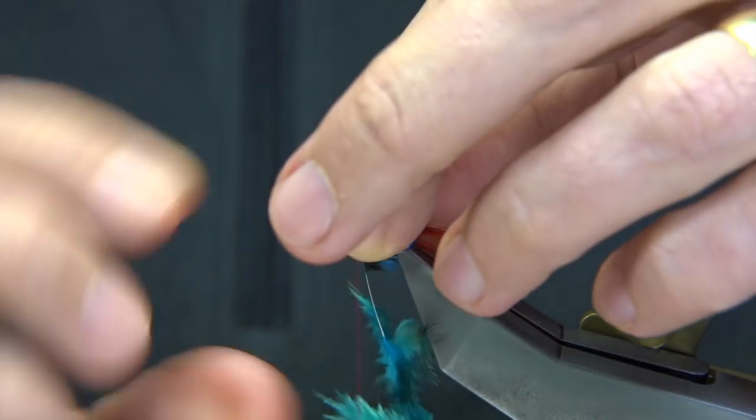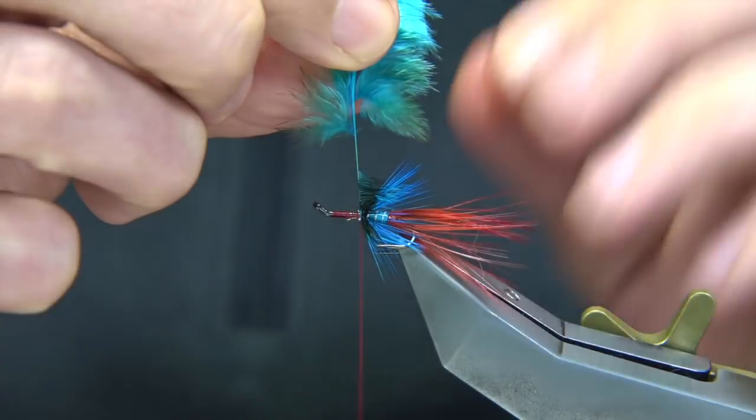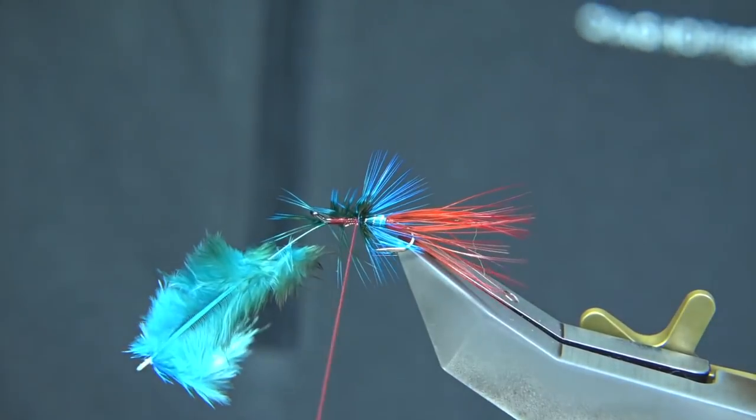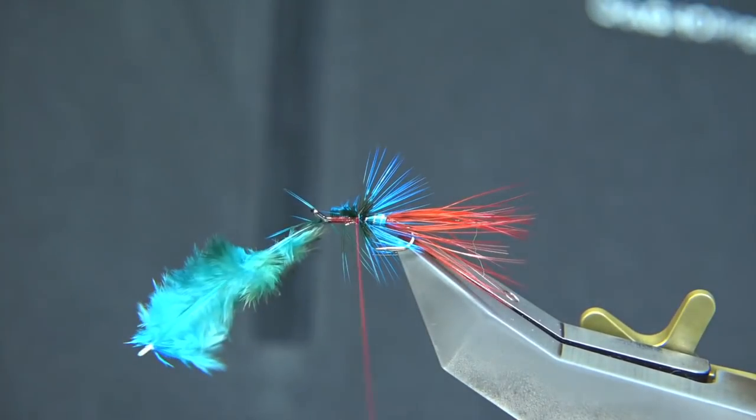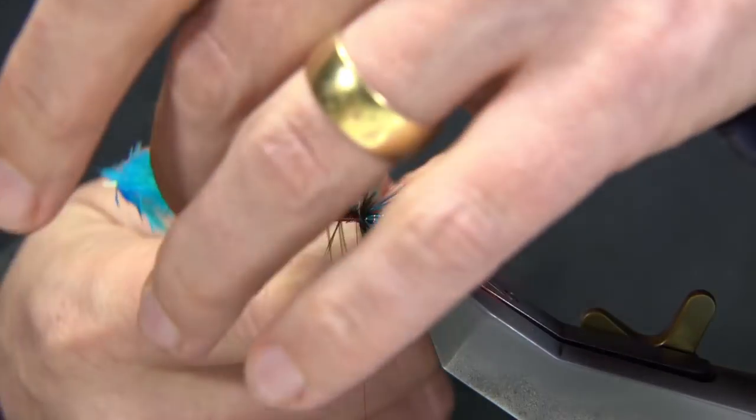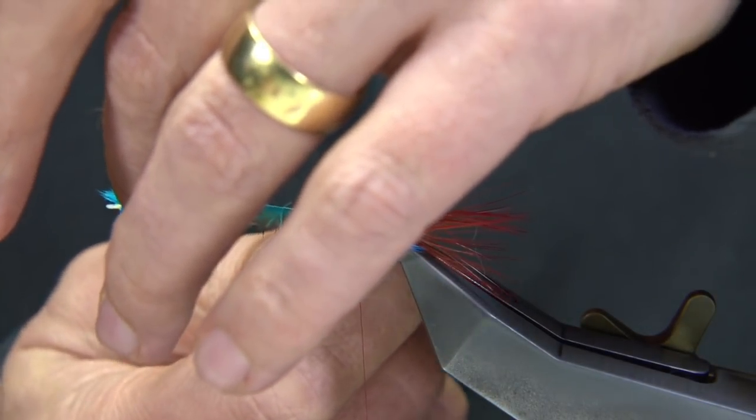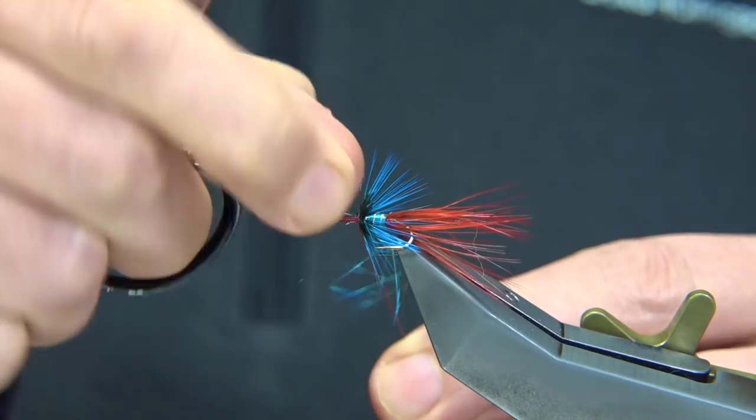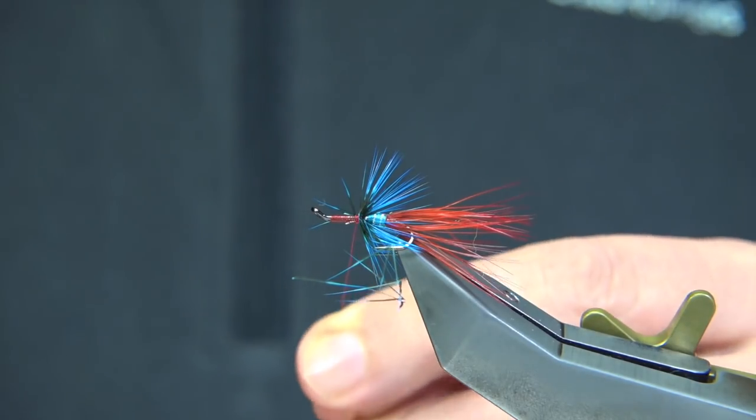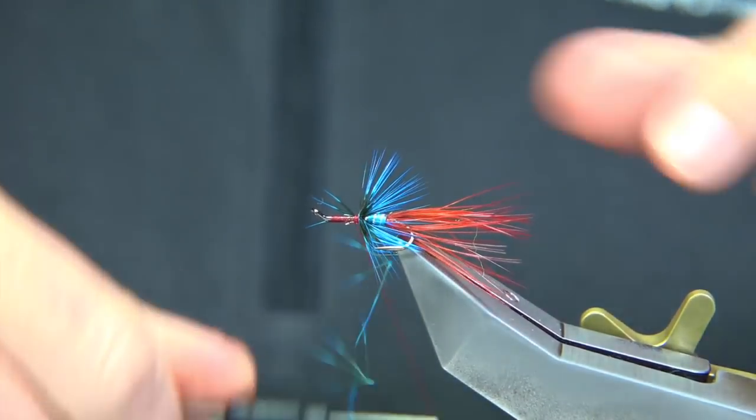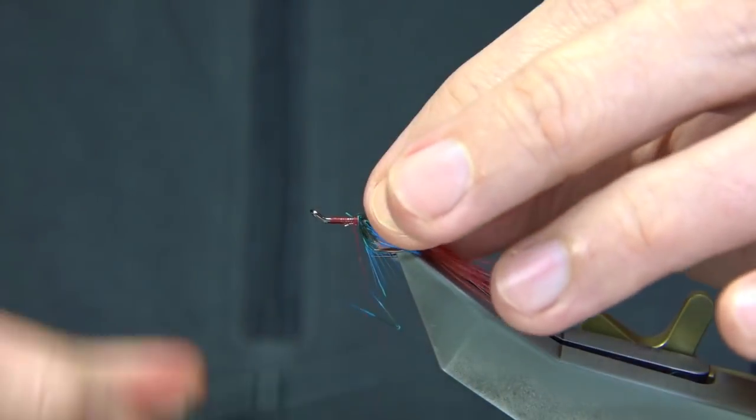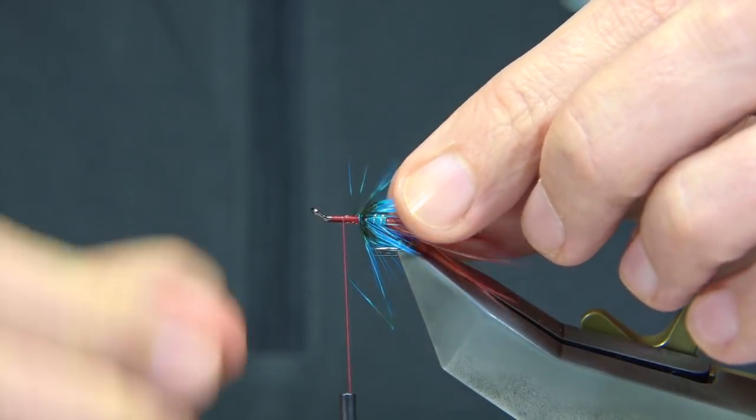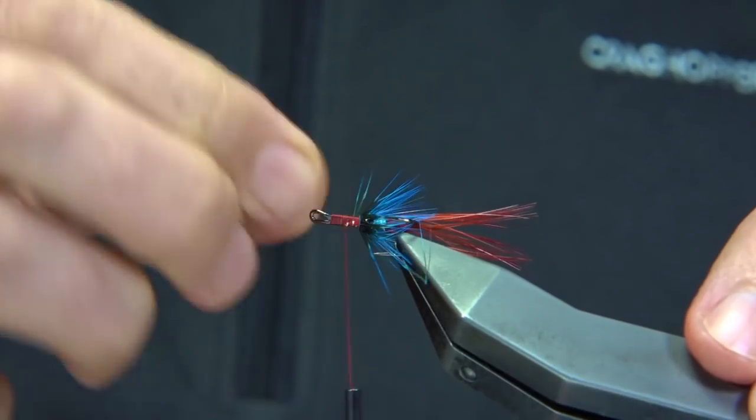If you haven't got a badger neck dyed blue, just use a normal teal blue colored or kingfisher blue. When you're happy with the number of turns, trim away. What we do is trim this full length of the body. Keeping the thread tight, you can pull these fibers off.